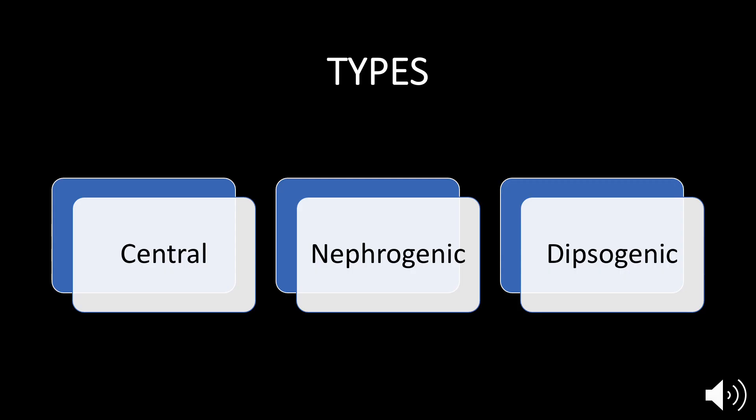Here you can see the different types of diabetes insipidus. The most common type and main focus of this presentation is the central form. In central diabetes insipidus, the hypothalamus doesn't produce enough ADH, leading to a lack of the hormone. When there's a lack of ADH, the posterior pituitary doesn't have enough of it and cannot release it in times of need.